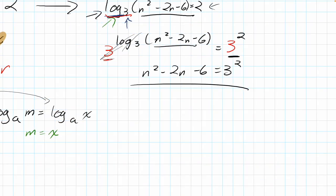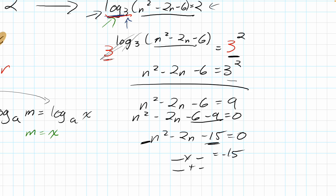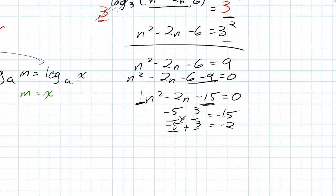From here it's quadratic work. 3 squared is 9, but we need to set the equation equal to zero to factor or use the quadratic formula. So move 9 over: n² − 2n − 6 − 9 = 0, which simplifies to n² − 2n − 15 = 0. We need two numbers that multiply to −15 and add to −2: that's −5 and +3.